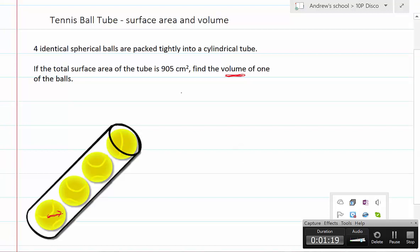Well, the surface area of a cylinder is the two ends, 2πr² plus the curved wall, 2πrh. Well, the radius of the cylinder is definitely going to be the same as the radius of the tennis ball, so that's OK.